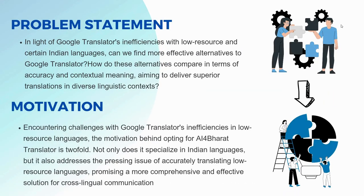Coming to the problem statement: can we discover more efficient alternatives to Google Translator, considering its limitations with low-resource and specific Indian languages? How do these alternatives fare in terms of precision and contextual understanding, with the goal of providing superior translations in various linguistic scenarios? The motivation for choosing AI4Bharat Translator is driven by two main factors: the limitations of Google Translator in handling low-resource languages, and the need for accurate translation in Indian languages. AI4Bharat Translator offers a more comprehensive and effective solution for cross-lingual communication, specifically addressing the challenges of translating low-resource languages.